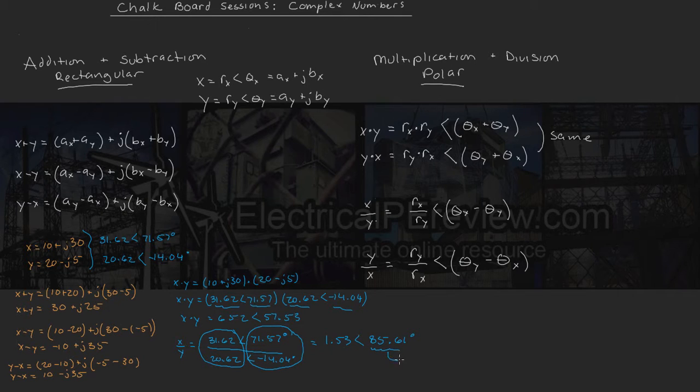and we come up with 1.53 for our magnitude at a phase angle of 85.61 degrees. And how we came up with this is really theta equals 71.57 degrees minus a negative 14.04 degrees. So since these two negatives cancel out into a positive, we're actually adding our two angles here.